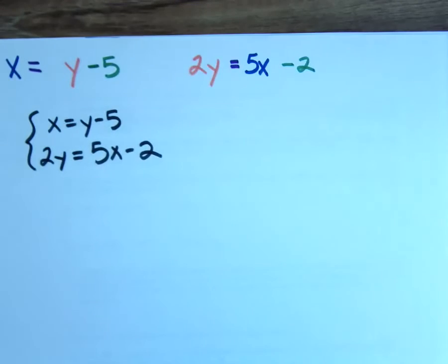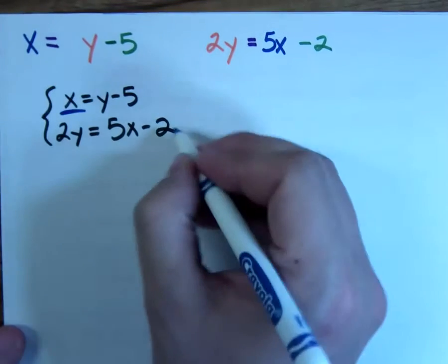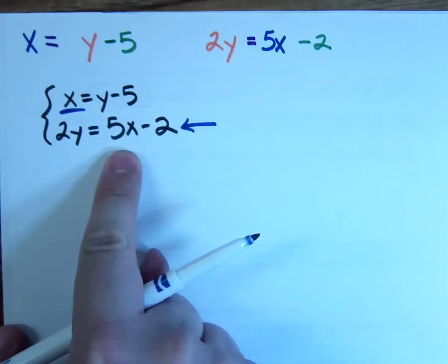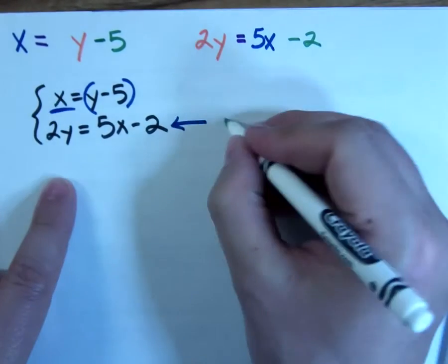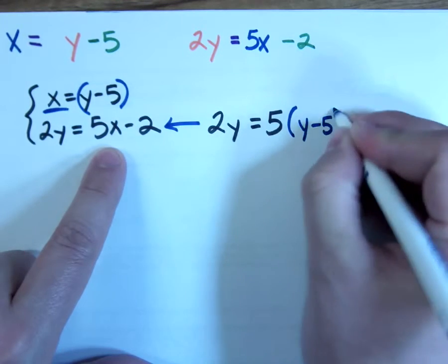Of the three methods that we learned for solving systems of equations, which one makes the most sense with this particular set of equations? Well, they're not lined up, so I'd say not addition. They're also not both in slope intercept form, so I'd say not graphing. So that leaves us with substitution. And it turns out substitution is pretty easy because this first one already has a variable isolated. I'm going to take this second equation and replace the X with Y minus five.